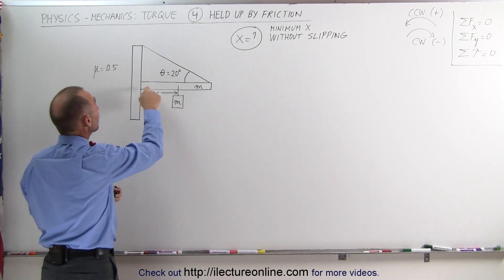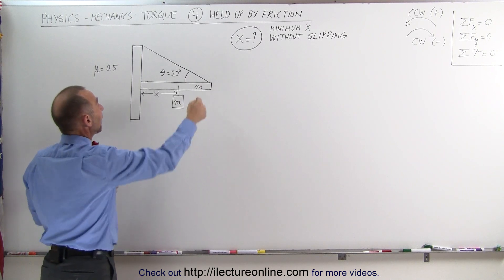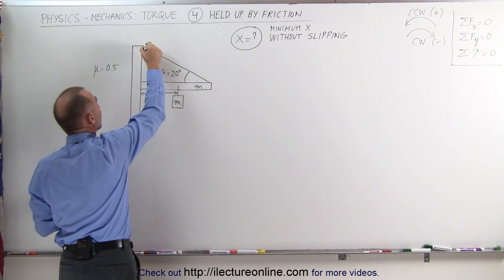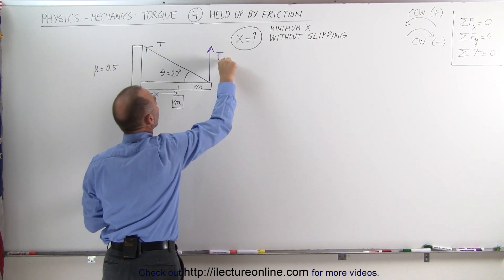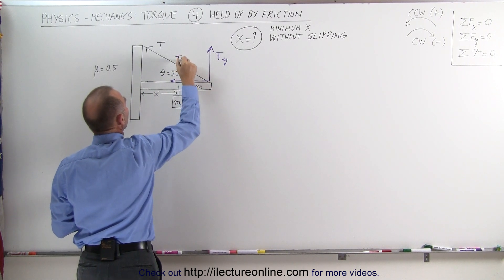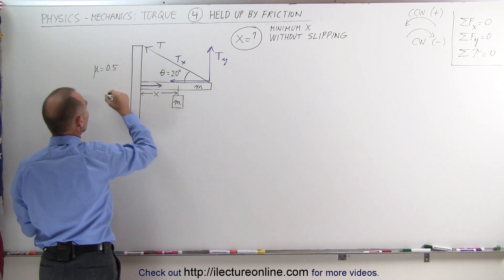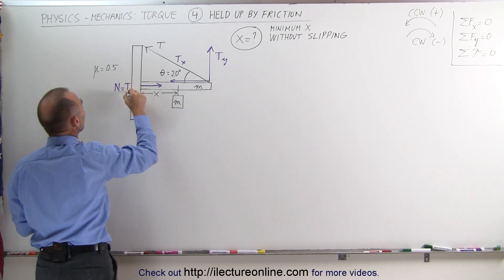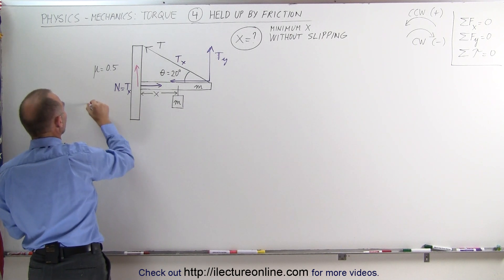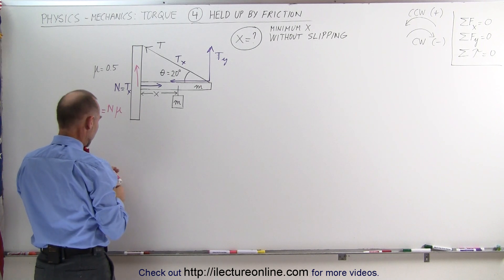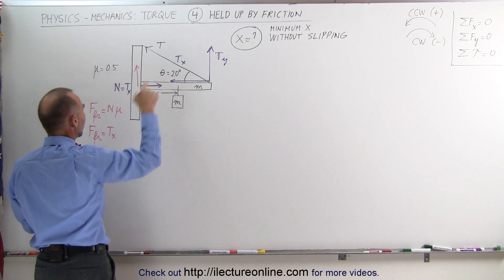What causes this friction force between the beam and the post? It is the force pushing the beam into the post, which is done by the horizontal component of the tension in the string. The tension has a vertical component T_y and a horizontal component T_x. It is T_x that pushes the beam against the post, creating a normal force. The normal force equals T_x, and the friction force equals the normal force times the coefficient of friction mu.